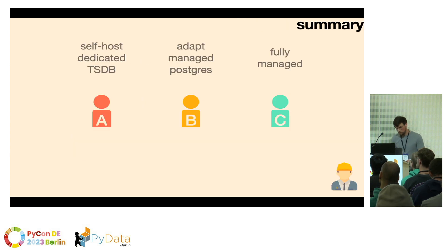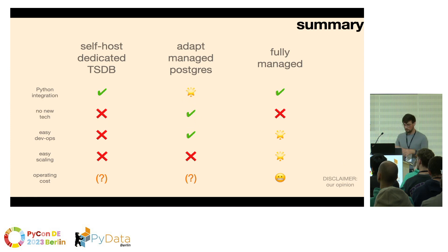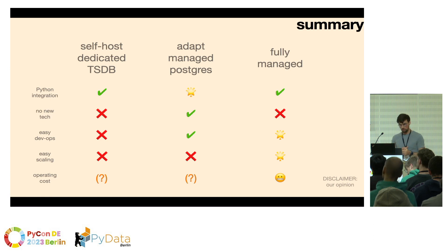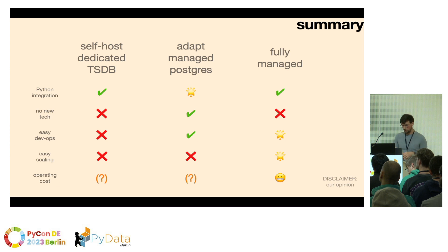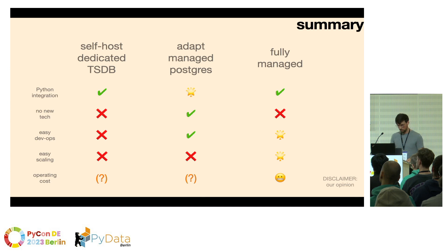Everybody reconvened and looked at the options. The final categories we evaluated were: Python integration — managed Postgres would be the best option there; no new tech — again managed Postgres wins; but for how easy the DevOps is and the scaling, the fully managed solution, which is Timestream, definitely wins. Operating cost is highest for Timestream we think, but we projected that it works for us, and so that's what we went with.